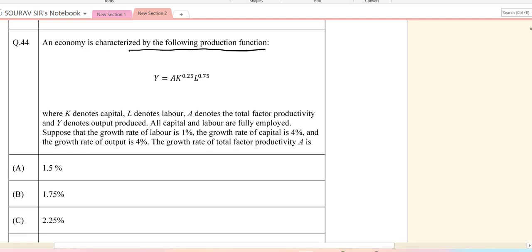Next, question 44. Now there's a numerical. If the economy is characterized by the following production function where A denotes the total factor productivity and Y denotes the output, let's solve this one. So Y equals A into K to the power 0.25, L to the power 0.75.